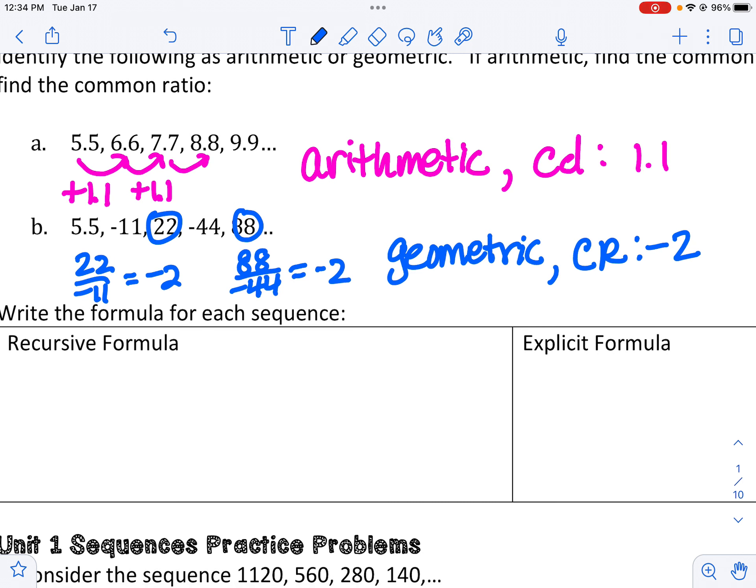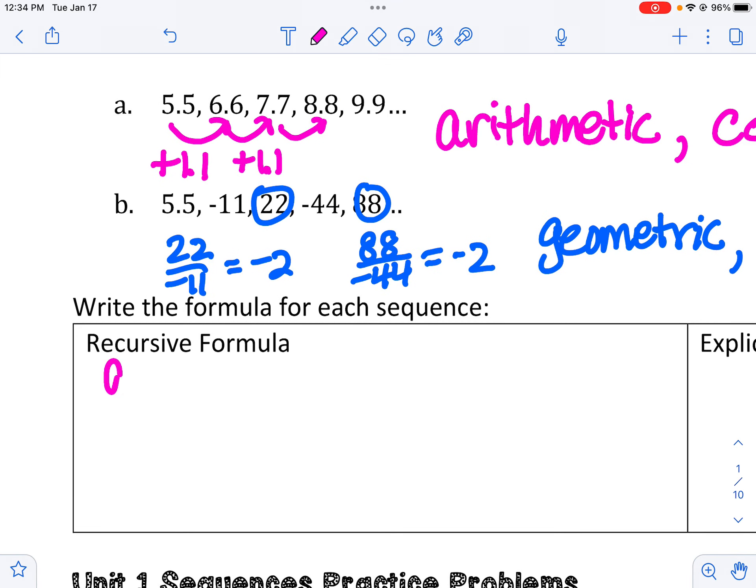So then we took a look at how you can write a recursive formula. A recursive formula is how you take one term and find the next. So for the recursive formula for A, the first term, A sub 1 is 5.5. And to find any number, A sub n, we take the number before it and we add 1.1.